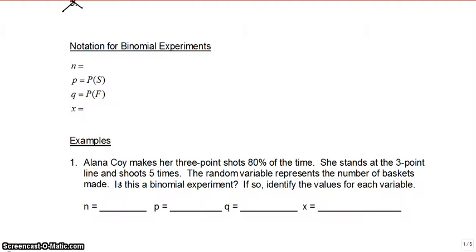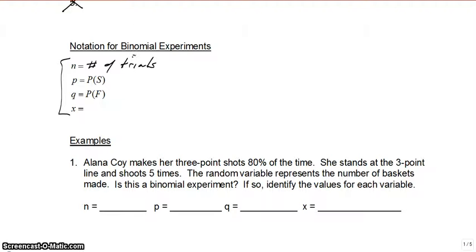A little bit on the notation — we're going to be using these variables quite a bit. P is the probability of success. Q is the probability of failure. N is the number of trials. And X is the number of successes in N trials.